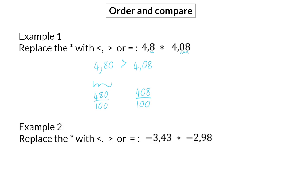In example 2, both values have two decimals, which means we will be comparing hundredths. We need to compare minus 3,43 with minus 2,98. Minus 3,43 is a smaller value than minus 2,98. And we will then say that minus 3,43 is also smaller than minus 2,98.